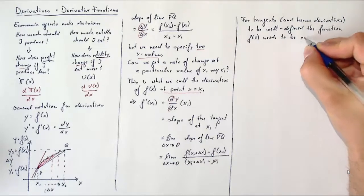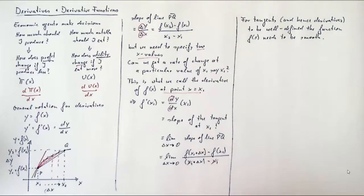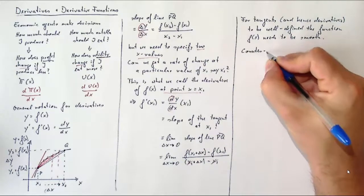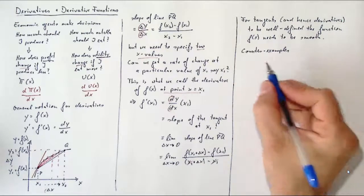In particular, we need f(x) at the point at which we want the derivative to have some sort of notion of smoothness—it needs to be smooth in some sense. It's possibly easiest to explain what we mean by illustrating two counterexamples.